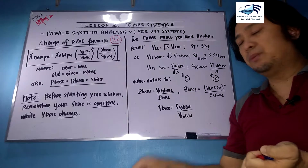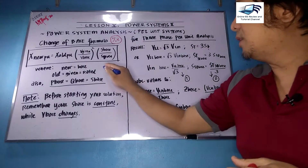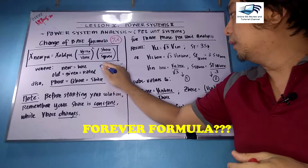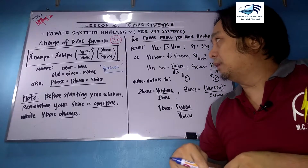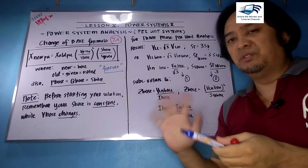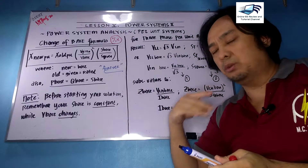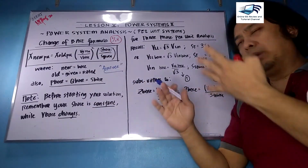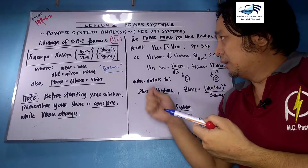I have a mnemonic I usually use in class — I call this the 'forever formula.' In love life there's no forever, but in power system analysis there is a forever formula. It is called 'forever' because one value stands alone no matter what happens to the calculation, and that is the S base here.